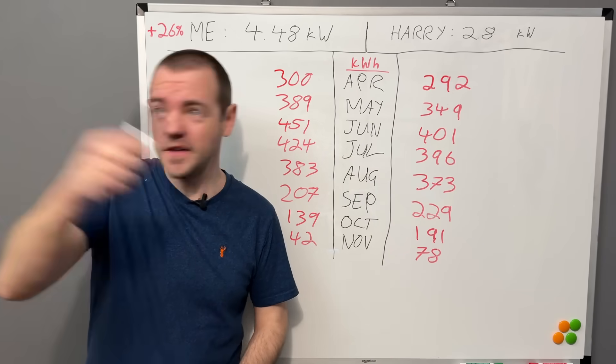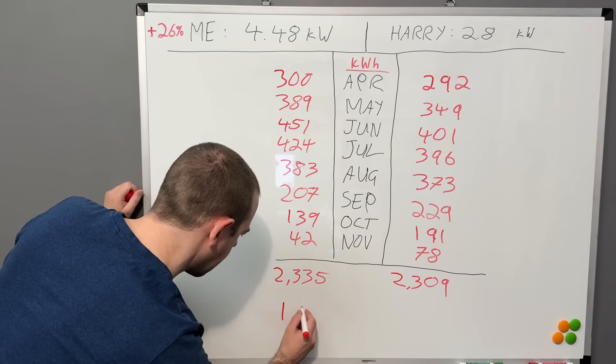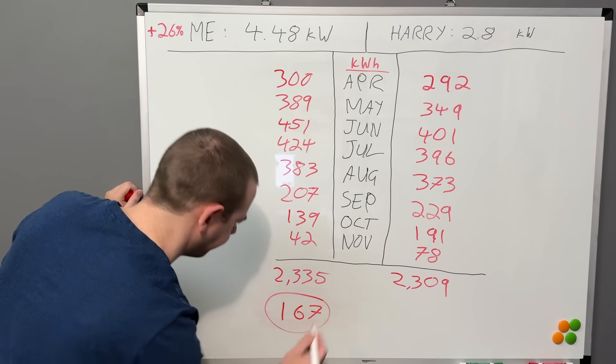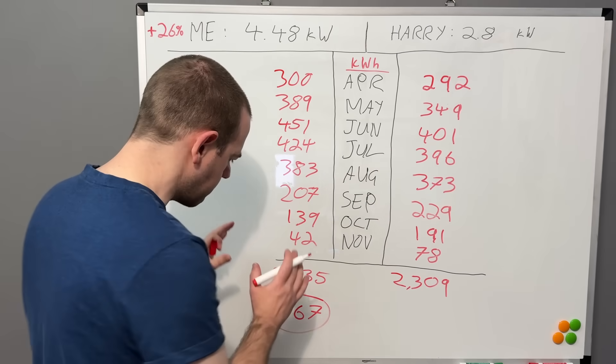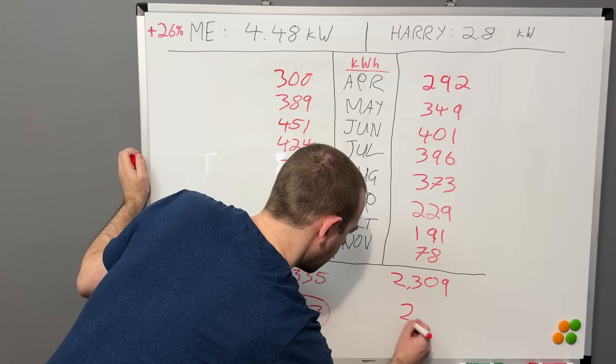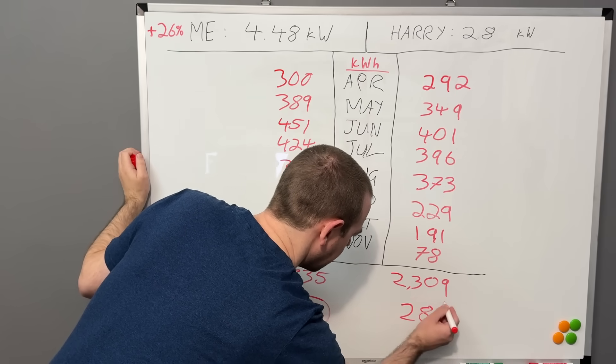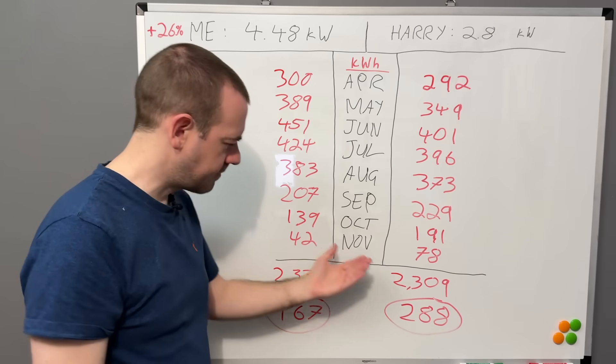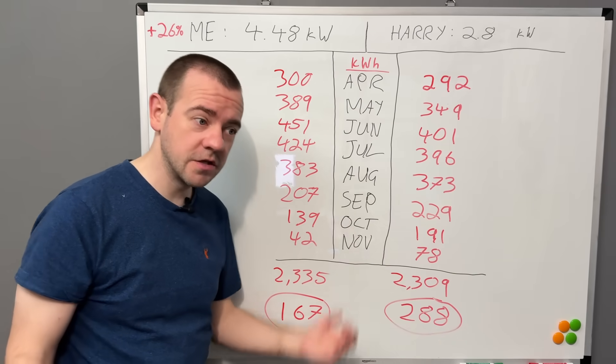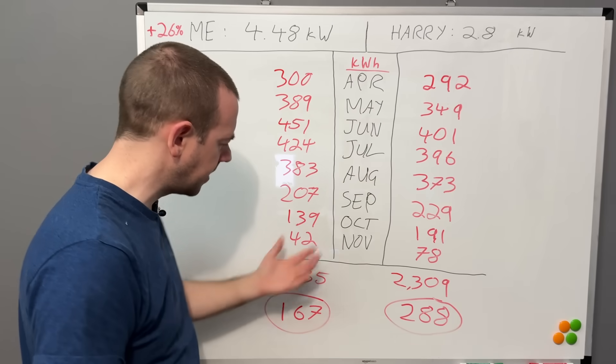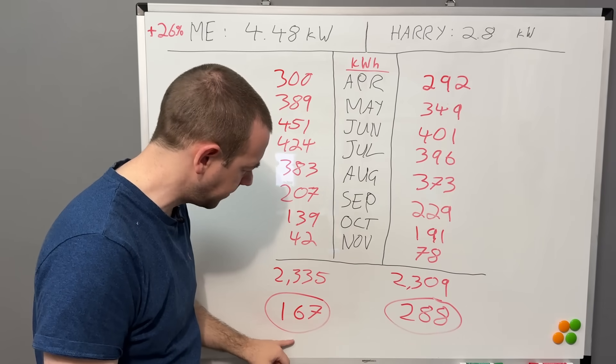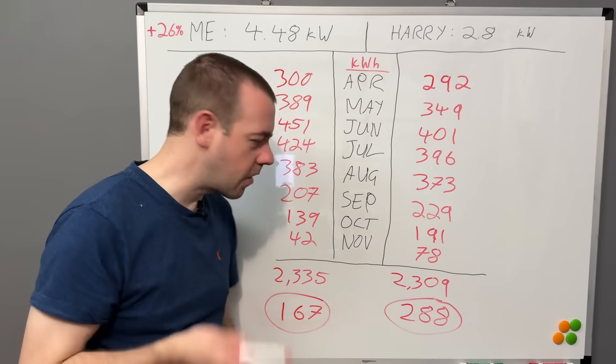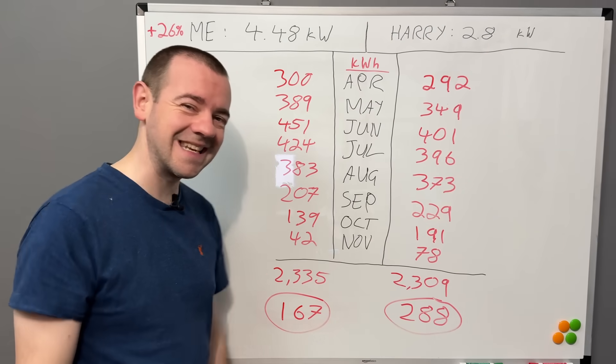That's 167 kilowatt hours per panel that's what I'm getting from my array. So what's Harry getting? 288 per panel. So clearly he has better panels, he has better inverter in terms of where we are. We're both in Yorkshire with dull skies typically. So look at the difference per panel. I have 14 panels, he has eight. So he's getting 288 kilowatt hours per panel on his roof, I'm getting 167.